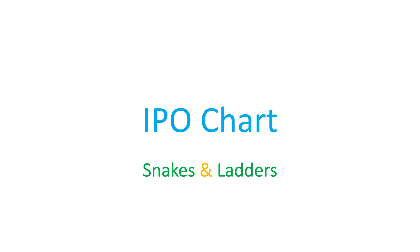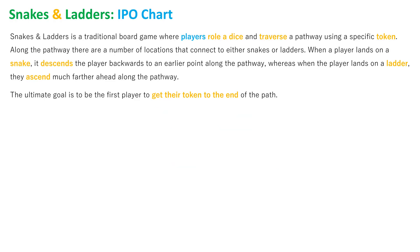IPO chart: Snakes and Ladders. In a recent video we looked at a context and data flow diagram of Snakes and Ladders and the processes involved in the flow of data between those processes. Today we're going to look at an actual input process output chart outlining those three specific areas.